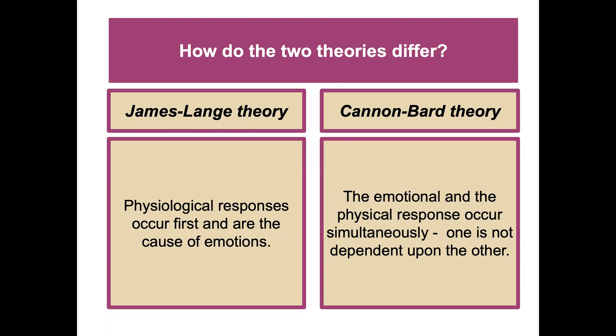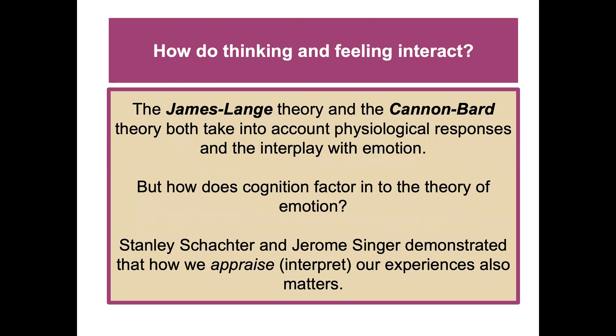These theories differ in key ways: in the James-Lange theory, physiological responses occur first and are the cause of emotions. In the Cannon-Bard theory, the emotional and physical responses occur simultaneously — one is not dependent on the other. Both theories, however, take into account physiological responses and their interplay with emotion.